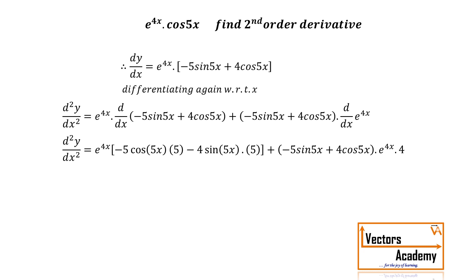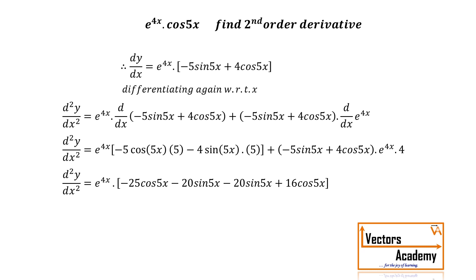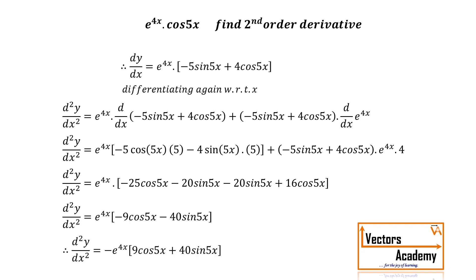Now I can take e raised to 4x common from the complete equation. So once we take e raised to 4x common, the bracket will contain minus 9 cos φx minus 40 sin φx. I can take the minus sign outside the bracket, and that will be the answer for the second order derivative.